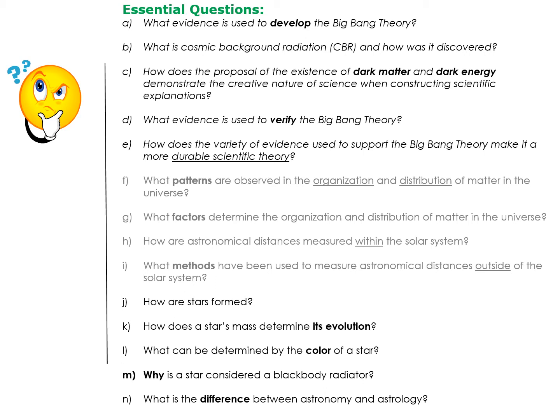Here are the essential questions we'll be dealing with throughout the whole unit. Pay attention to the top five — A through E — those all have to do with the Big Bang Theory. Just like evolution, let's not be afraid of it; let's find out what's behind it so we can make intelligent choices. There are basically four legs the Big Bang Theory stands on scientifically. We'll identify what evidence is used — cosmic background radiation, dark matter, dark energy — and what evidence verifies the Big Bang, and how that evidence makes it a durable scientific theory.